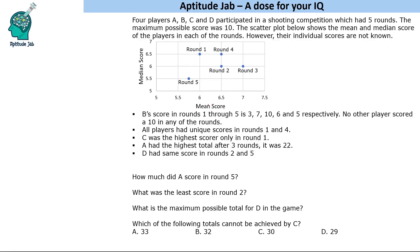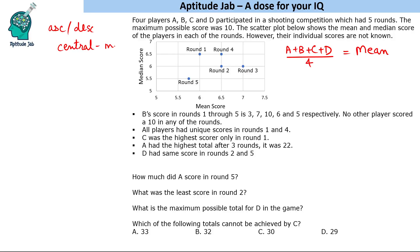The mean score is the total divided by four players — so (A + B + C + D) / 4. The median is the central score when you arrange scores in ascending or descending order. With four players, if scores are P, Q, R, S in ascending order, the median is (Q + R) / 2. So you exclude the lowest and highest scores, and divide the sum of the remaining two central scores by 2.